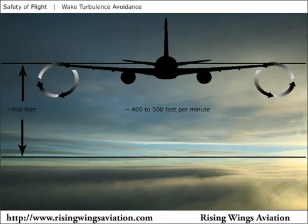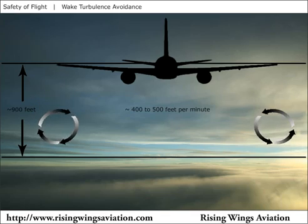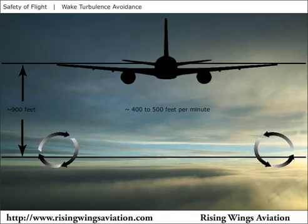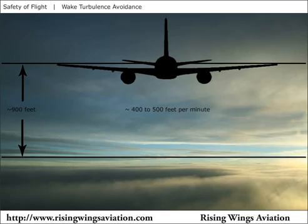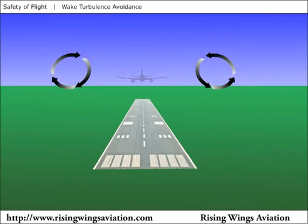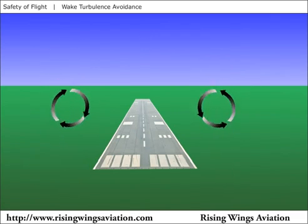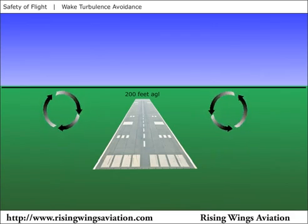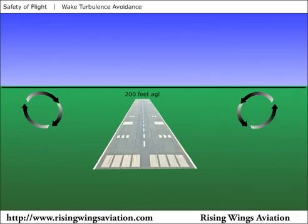Wing tip vortices will sink at about 400 to 500 feet per minute, slowing their rate of descent over time. They tend to level off about 900 feet below the altitude at which they were produced and then dissipate over time. If they are generated near the ground, they will usually stop descending within 200 feet of the ground and begin to move apart from each other until they dissipate, with lateral movement at only a few knots.